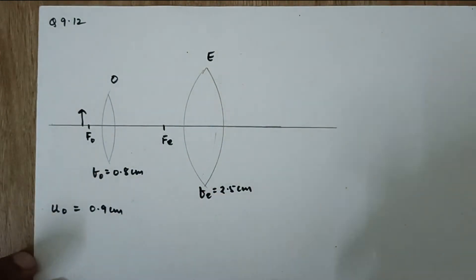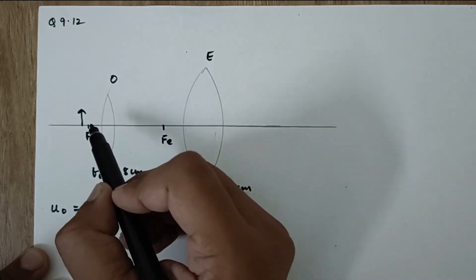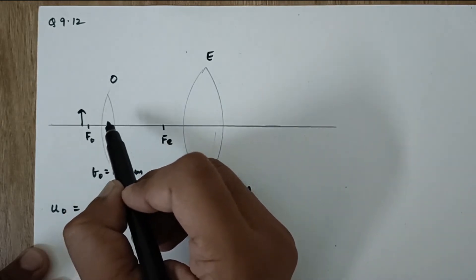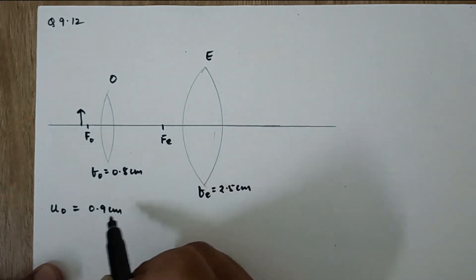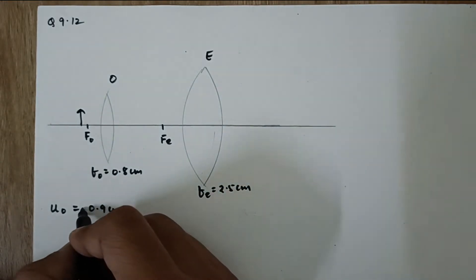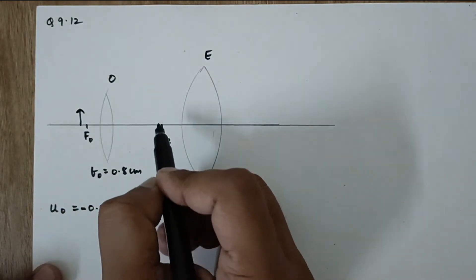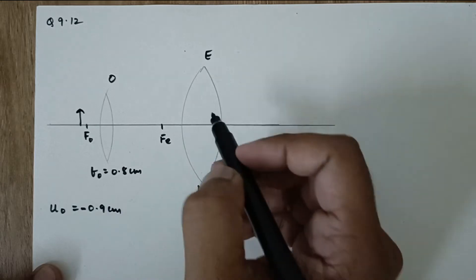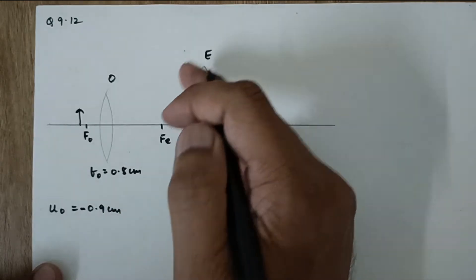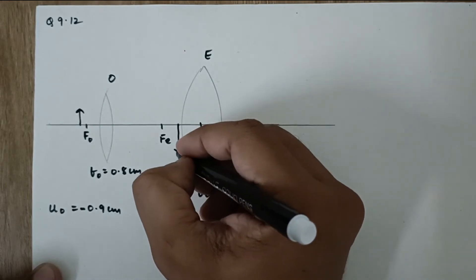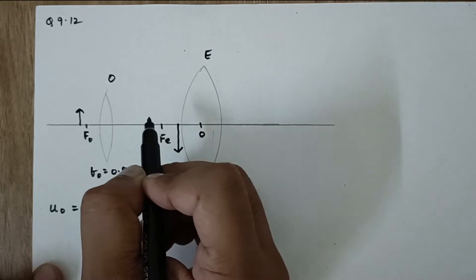Now as I said in the previous video, the object is just kept beyond the focus of the objective. So the focal length is this and the object distance is this. So this has to be negative. Now the image of this is going to be formed somewhere over here. Actually between the optical center and the focus of the eyepiece the image is formed because this is between F and 2F. So the image will be beyond 2F.